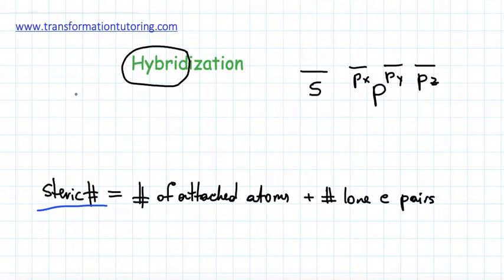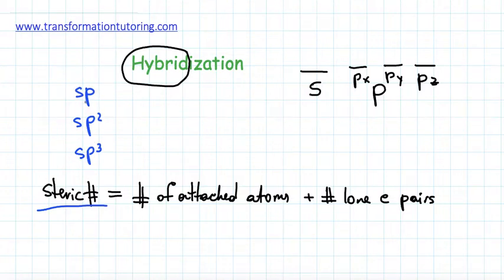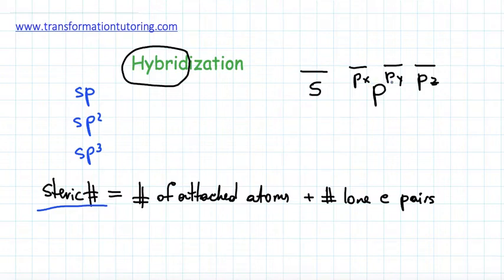The hybrid orbitals relevant to organic chemistry are sp, sp2, and sp3. The sp hybrid orbital is made by mixing one S orbital and one P orbital, such as Px. sp2 is made by mixing one S orbital and two P orbitals. sp3 is made by mixing one S orbital and all three of the P orbitals — Px, Py, and Pz.